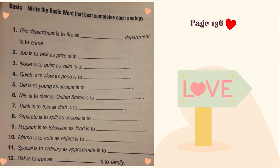And you will complete from seven to twelve. Fake is to thin, as draft is to blank. Separate is to split, as shoes is to align. These are synonyms. Program is to television, as food is to — this is from degree. Memo is to note, as object is to — these are synonyms. Special is to ordinary — these are antonyms — as approximate is to blank. Oak is to tree, as blank is to family.